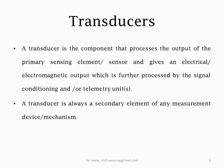Transducer mein kya hoga — transducer mein hamesha electrical quantity hi rahegi uske output mein. That is, it will process the output of the primary sensing element and it will give an electrical or electromagnetic output, jo aage signal conditioner mein jaayegi. Transducer hamesha ek secondary element hoga — sabse pehle aayega sensing element aur uske baad aayega transducing element. That's why a transducer is always a secondary element of any measurement device.